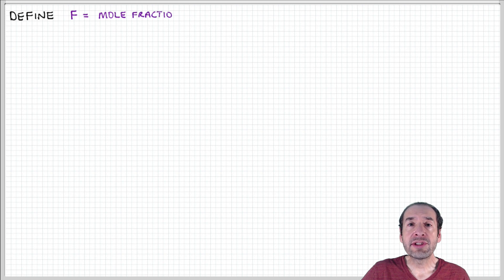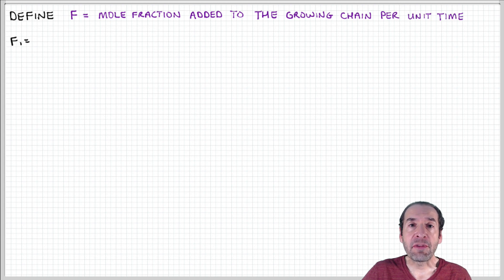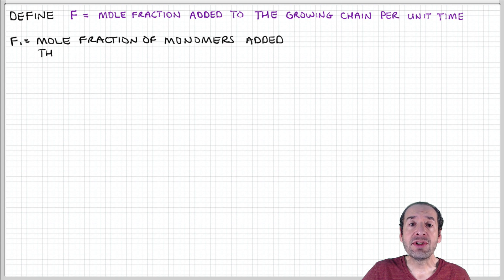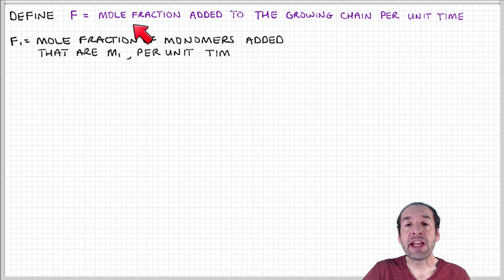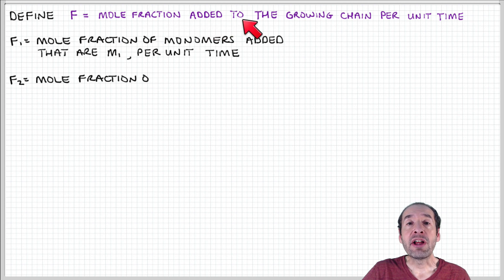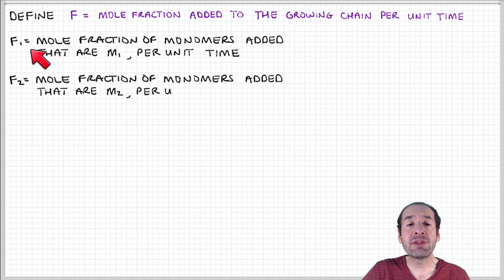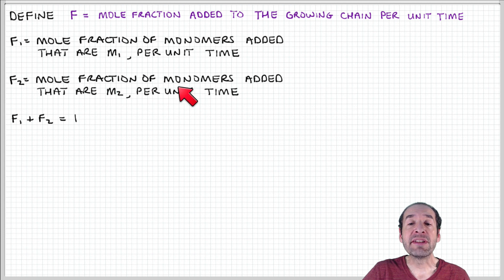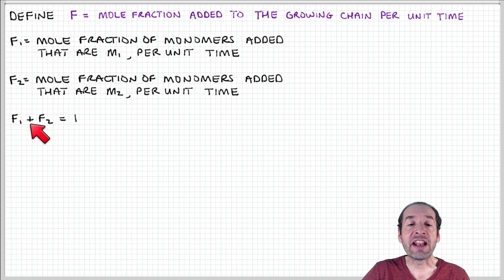Ultimately, we want to develop an expression for the amount of monomer 1 and monomer 2 present in the copolymer. A convenient way to do that is to define the parameter capital F, which is the mole fraction of a particular monomer added to the growing chain per unit time. So F1 is the mole fraction of monomer 1 added per unit time, F2 is the mole fraction of monomer 2 added per unit time, and since these are fractional quantities, F1 plus F2 must equal 1.